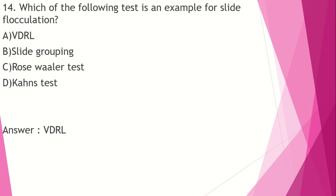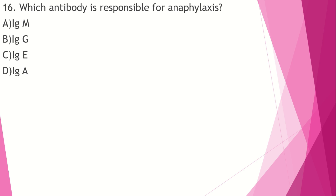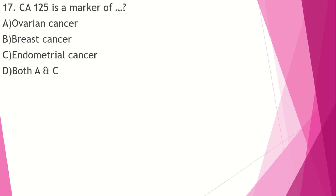The VDRL test is a slide flocculation test used in disease research laboratory interpretation. The Schick test is a neutralization test. Antigen-antibody reactions include agglutination, precipitation, neutralization, and complement fixation. Which antibody is responsible for anaphylaxis? The answer is IgE — primary hypersensitivity is mediated by IgE.